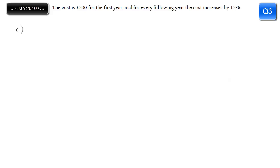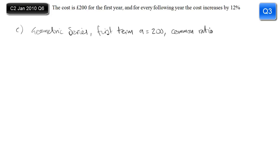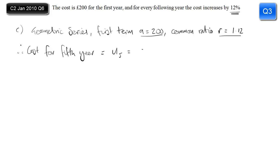Part c is a slightly different situation. The cost in the first year is 200 pounds, then it increases by 12% each year. The first term a is 200, and the common ratio — to increase by 12% you multiply by 1.12. The cost for the fifth year is simply the fifth term: a times r to the power 4. Substituting those values in gives the value to the nearest penny: 314 pounds and 70 pence.